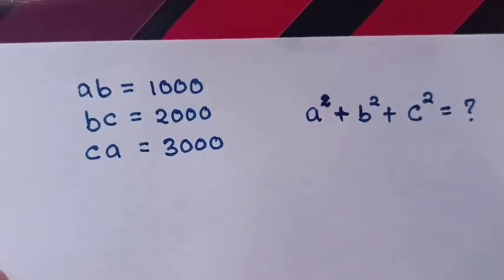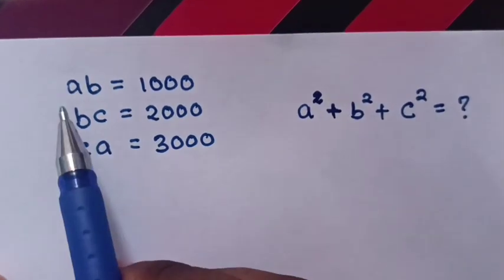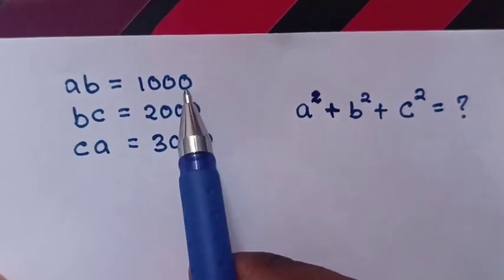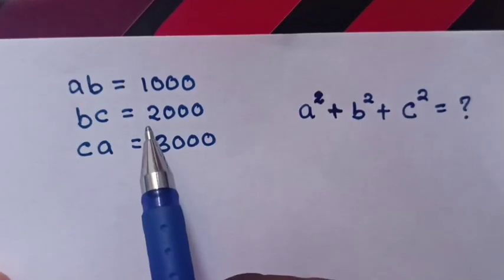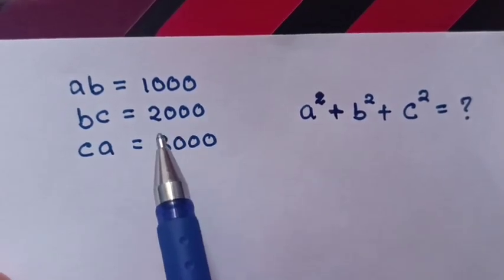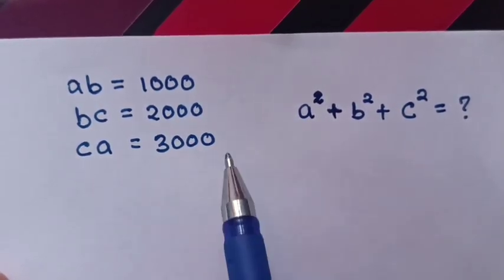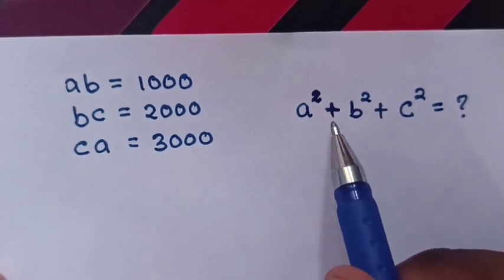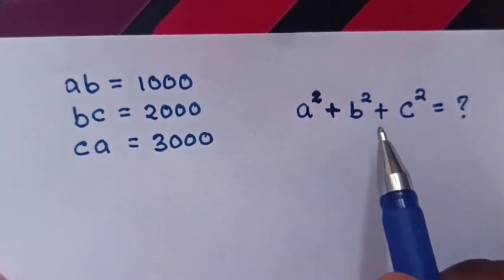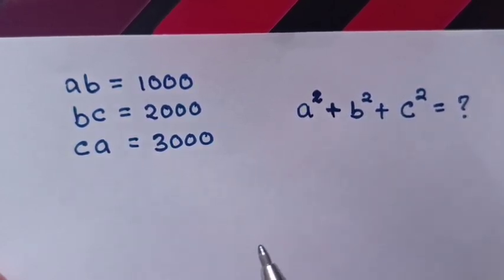Hello. How to solve: AB equals 1000, BC equals 2000, CA equals 3000 — then what is A² + B² + C²?